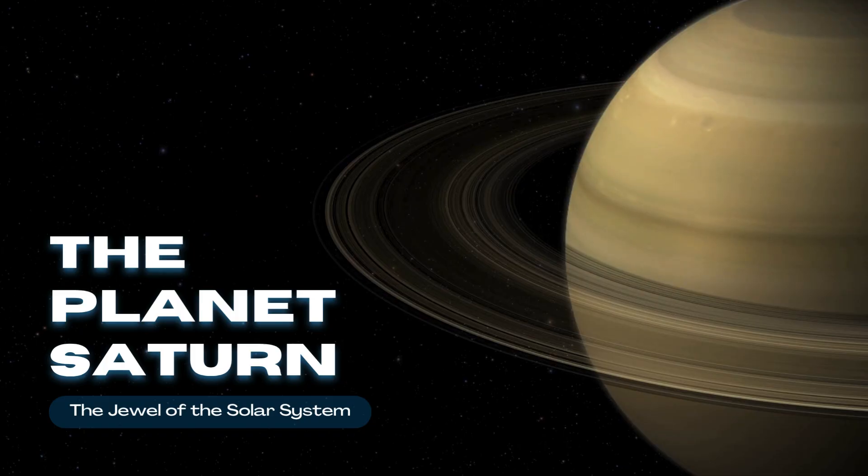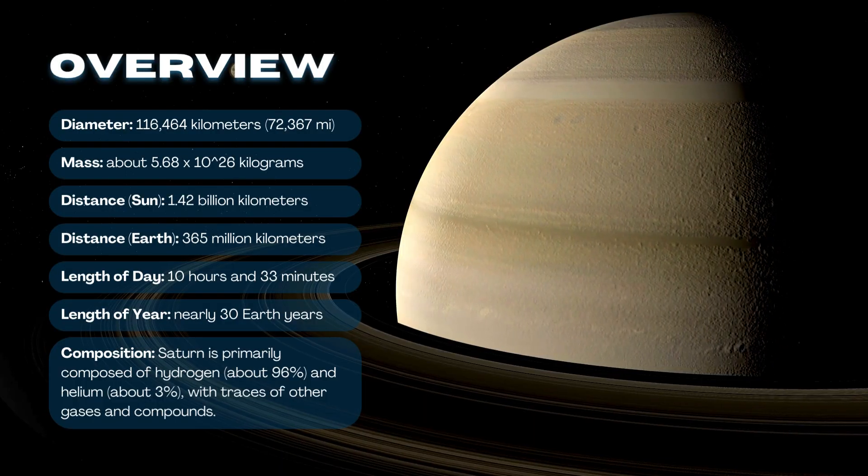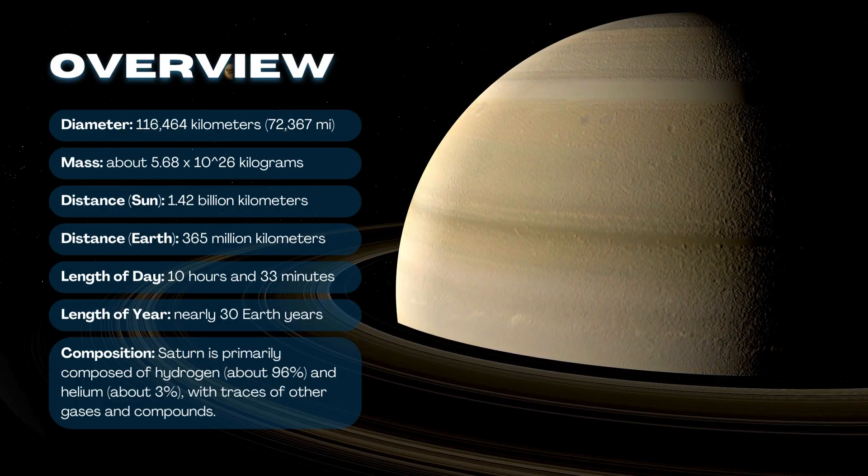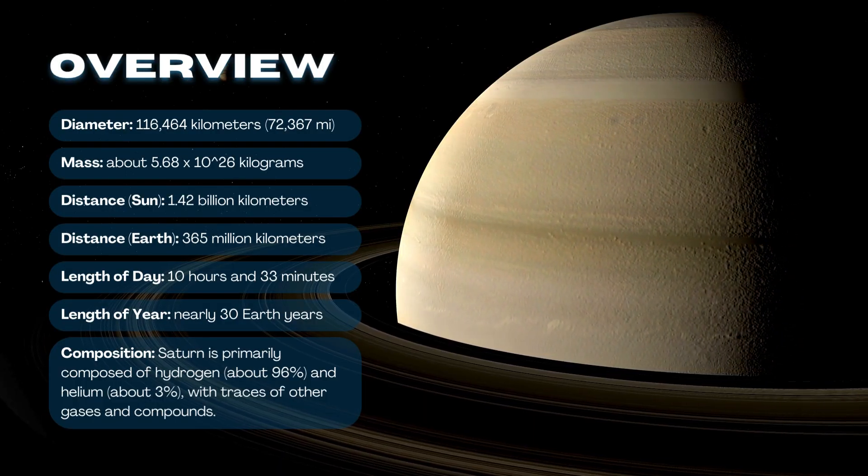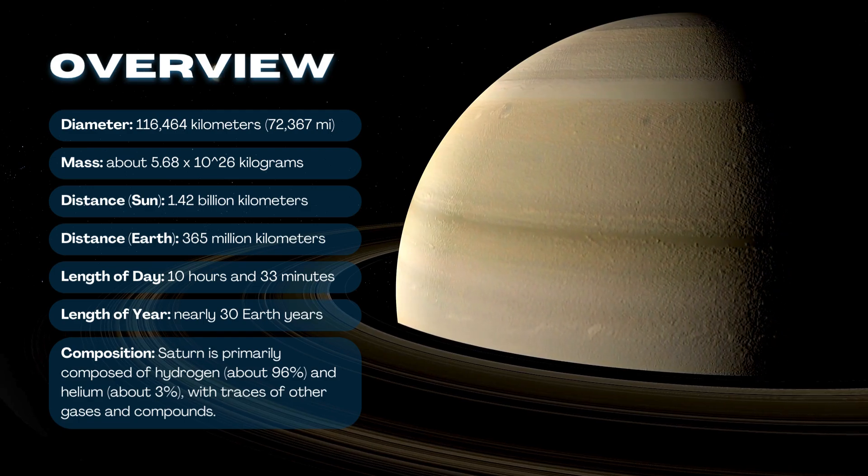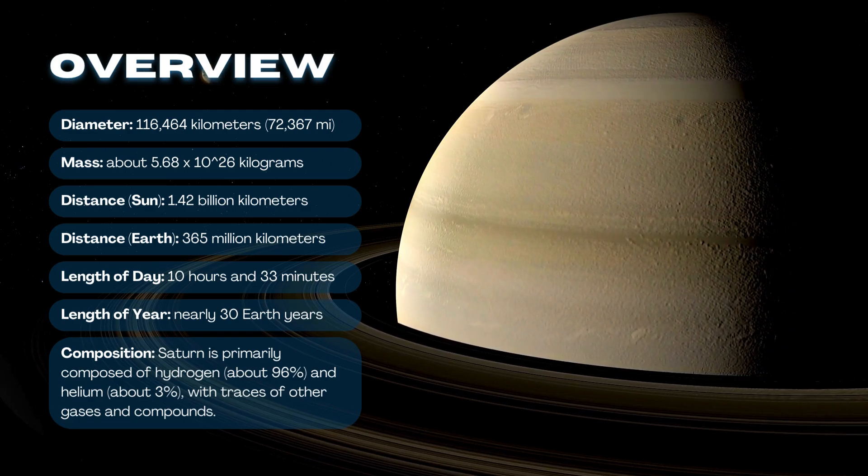The planet Saturn, the jewel of the solar system. Saturn is primarily composed of hydrogen, about 96%, and helium, about 3%, with traces of other gases and compounds.